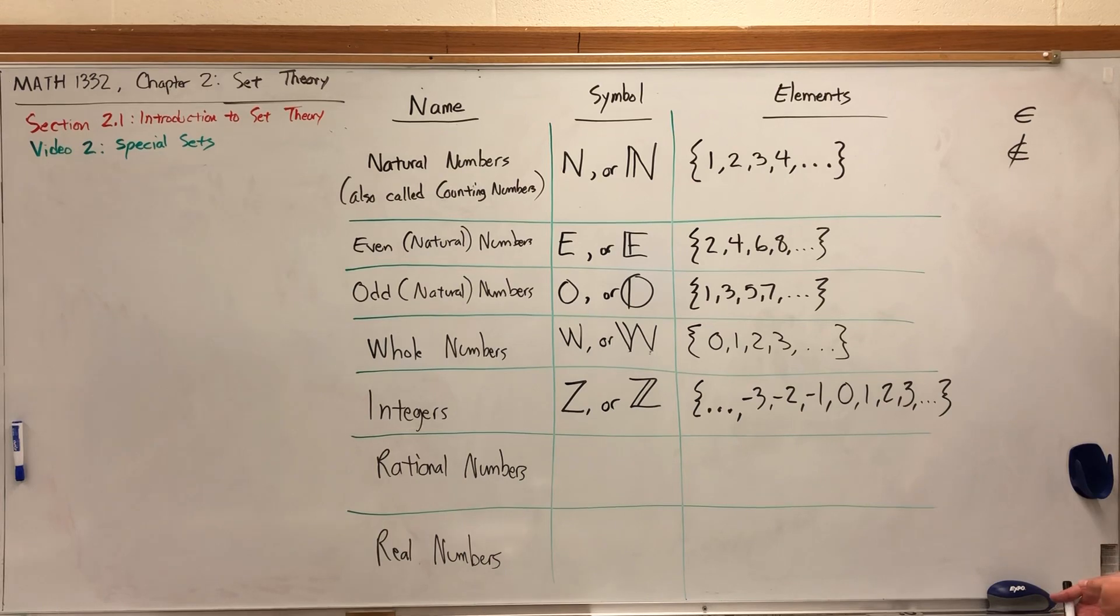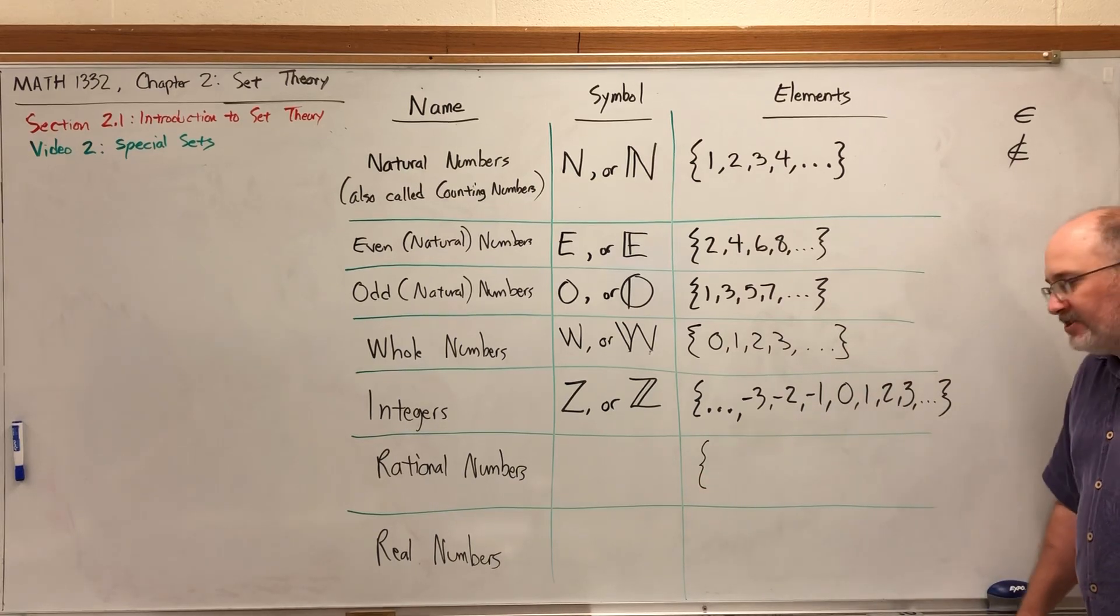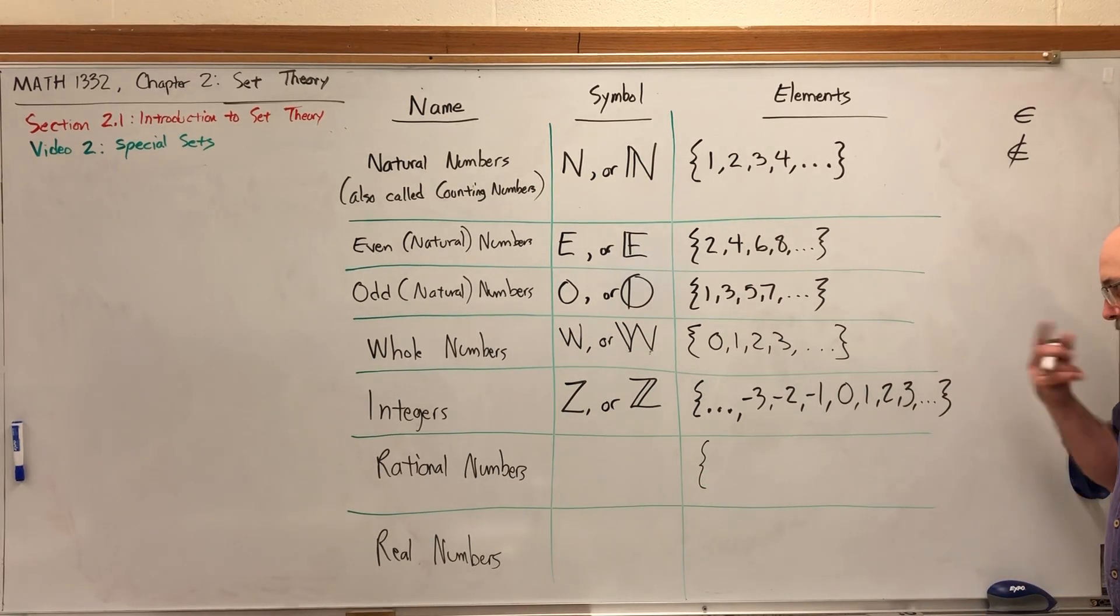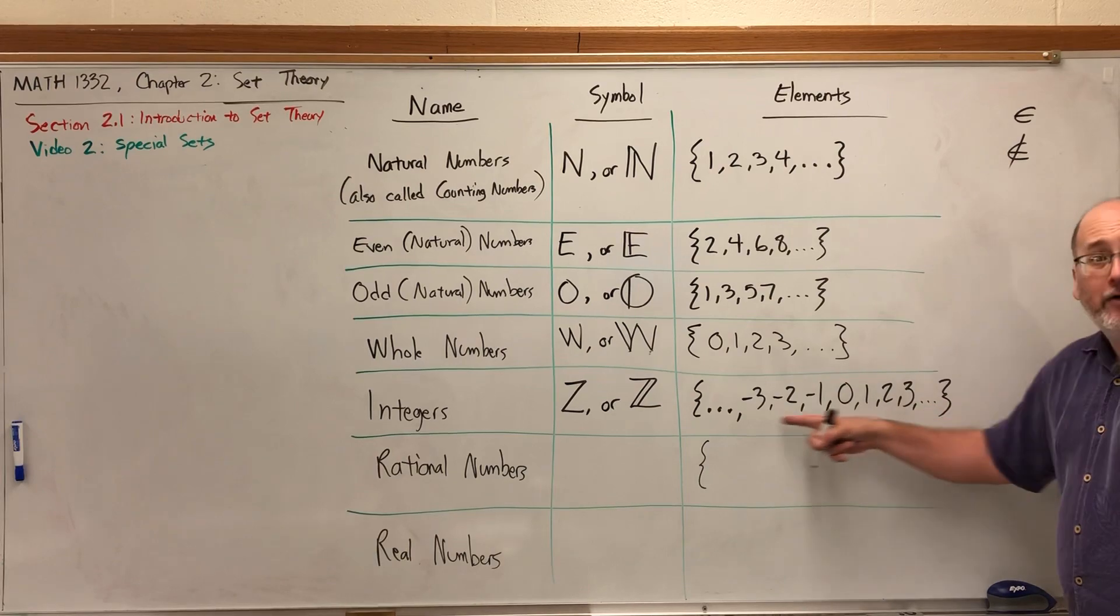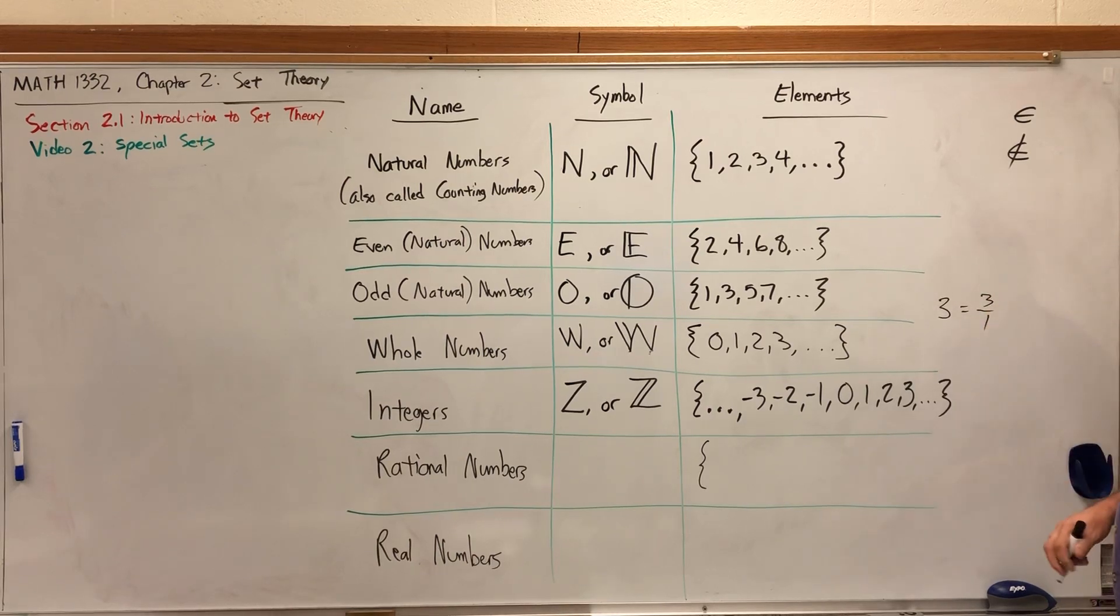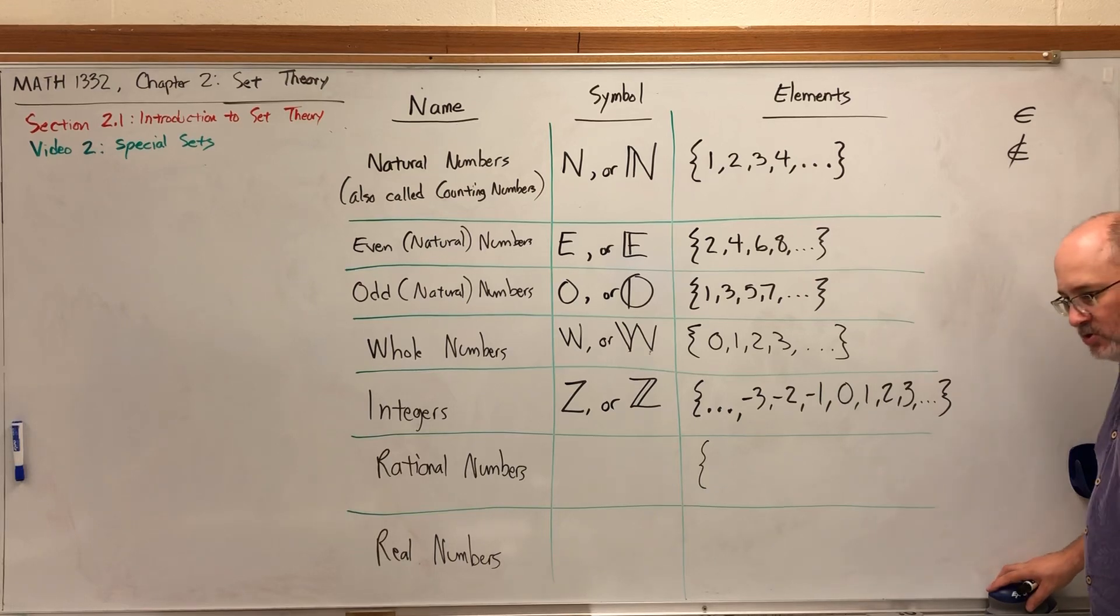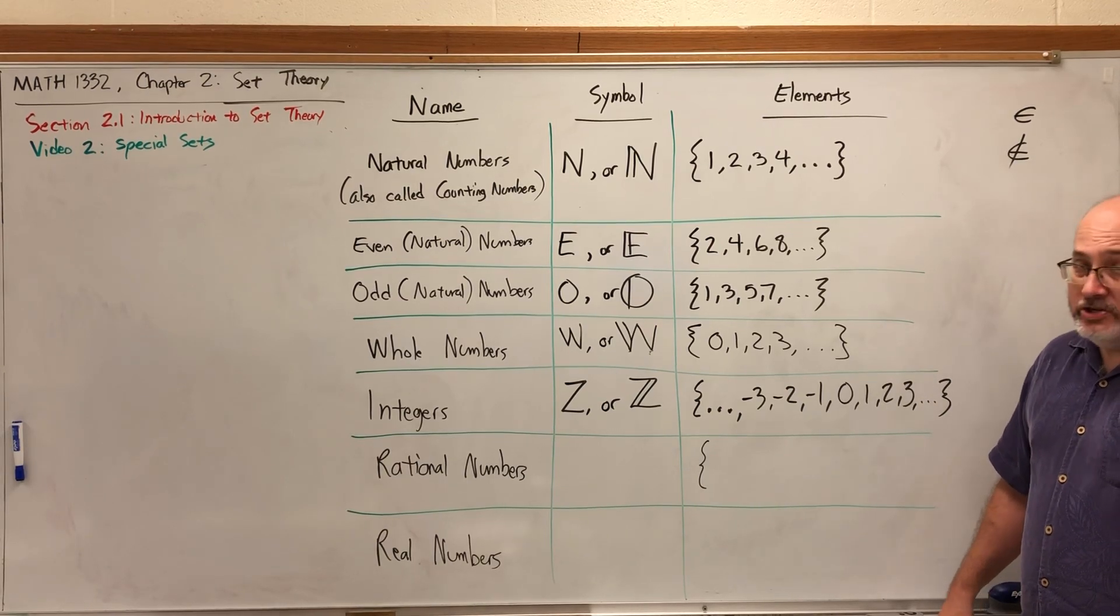So how can we write the rational numbers? We have to use a new way to represent a set. Instead of listing everything, let's describe what they look like. To go from integers to rational numbers, we need to pick up all the fractions. By the way, these integers are fractions also, because I can put them over one. All of the integers are rational numbers. By the way, the word rational means ratio.